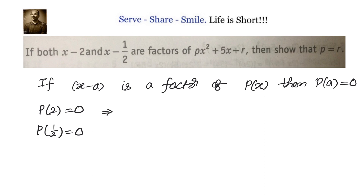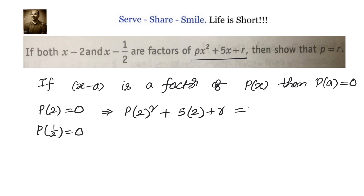p(2) equals 0 means we substitute x equals 2 into the polynomial. So we write p times 2 squared plus 5 times 2 plus r equals 0, which gives us 4p plus 10 plus r equals 0.